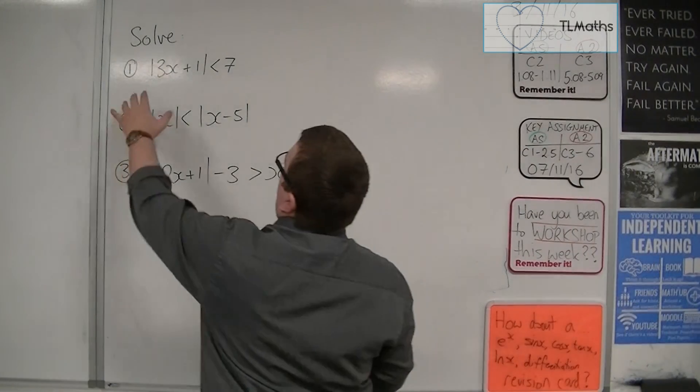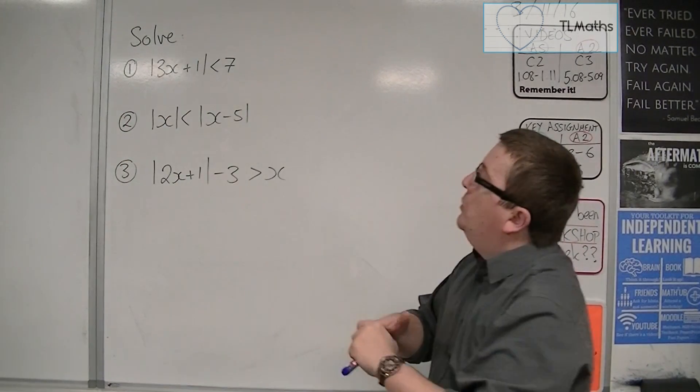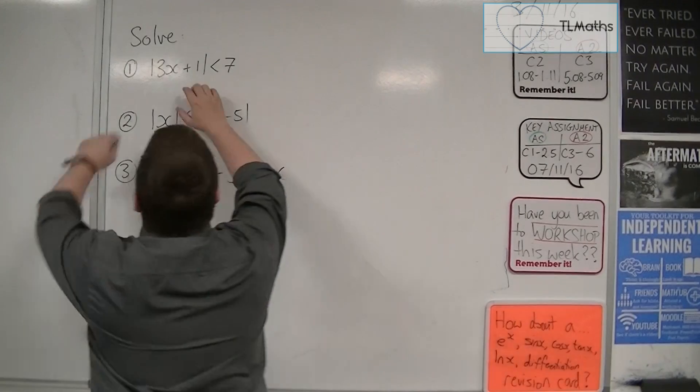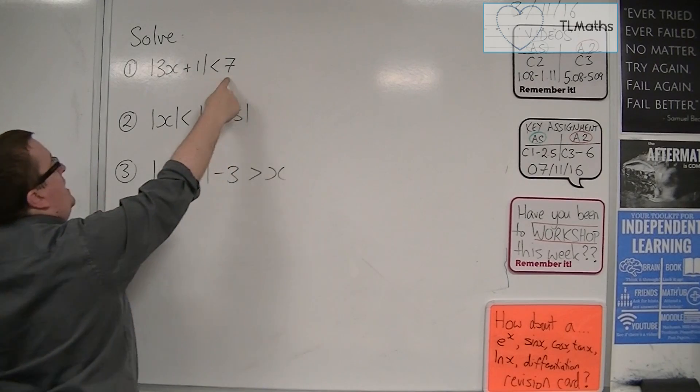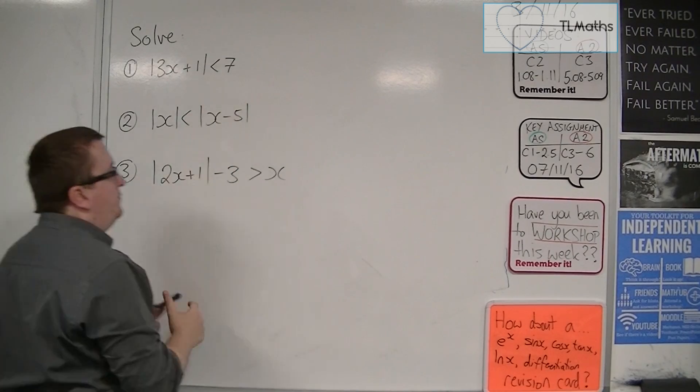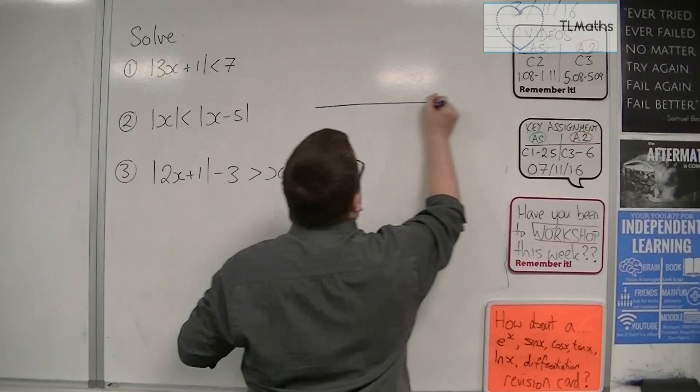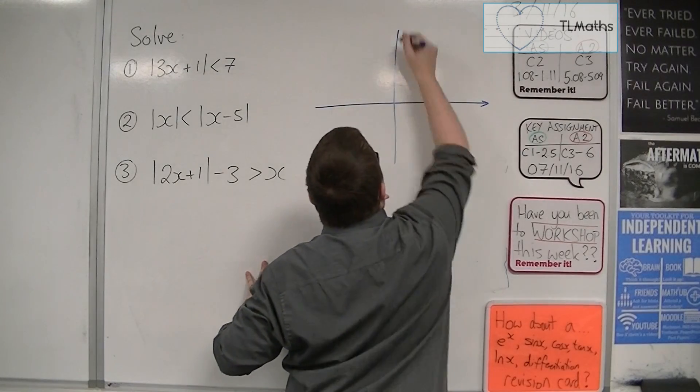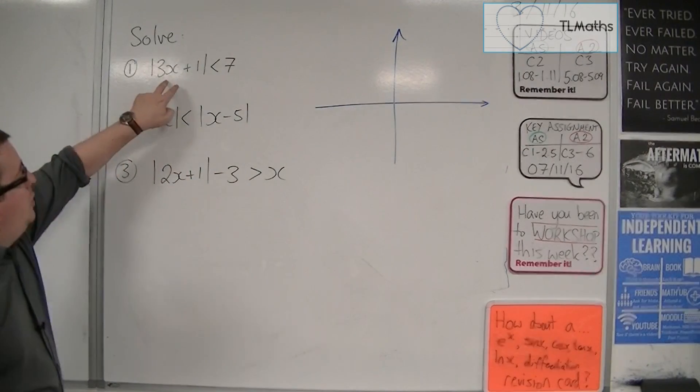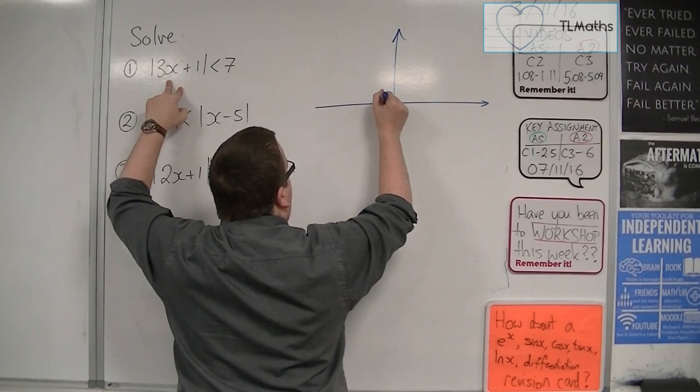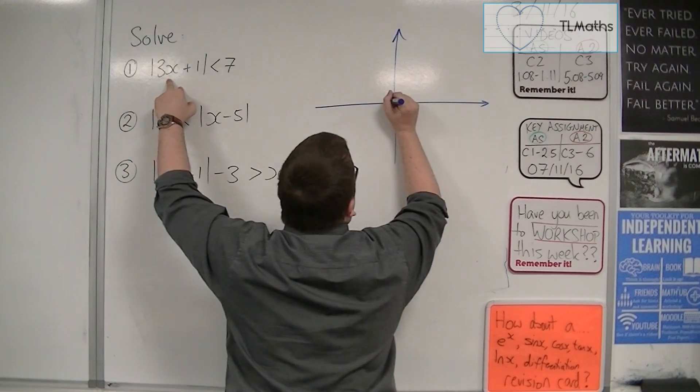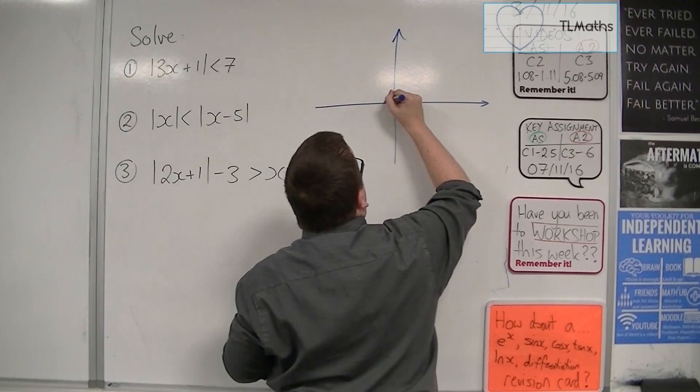Let's look at number 1 first. What I want to do is sketch y equals the modulus of 3x plus 1 and the line y equals 7. So let's do that. The modulus of 3x plus 1 will hit the x-axis at minus 1 third. So minus 1 third, about there.